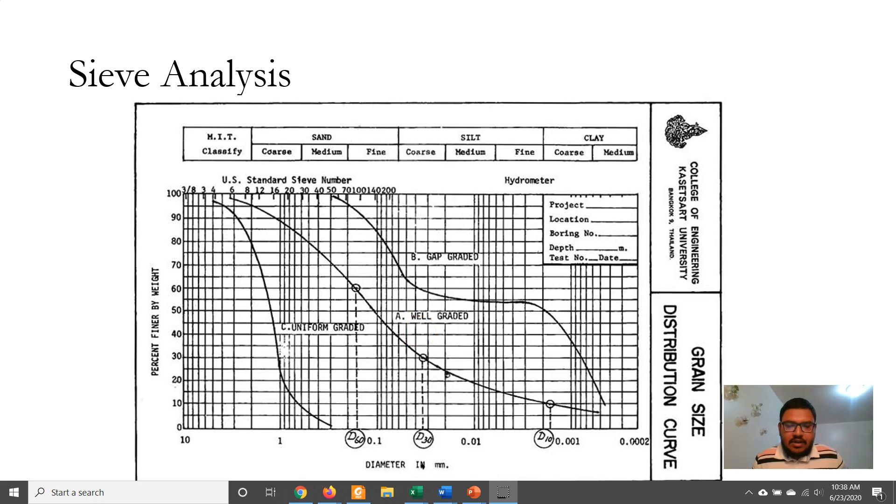If the curve is within a small range, then it is a uniformly graded soil or poorly graded soil. If the curve is horizontal for some specific range, the soil can be considered as a gap graded soil.